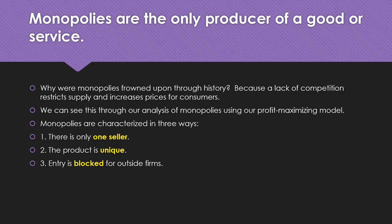Entry is blocked for outside firms, which can be due to economies of scale, controlling a resource, or government acquiescence through a patent or public franchise. Monopolies are frowned upon — we had the Sherman Antitrust Act passed in the late 1800s and another antitrust act in the early 20th century. Monopolies are historically frowned upon because they restrict supply and increase prices for consumers.